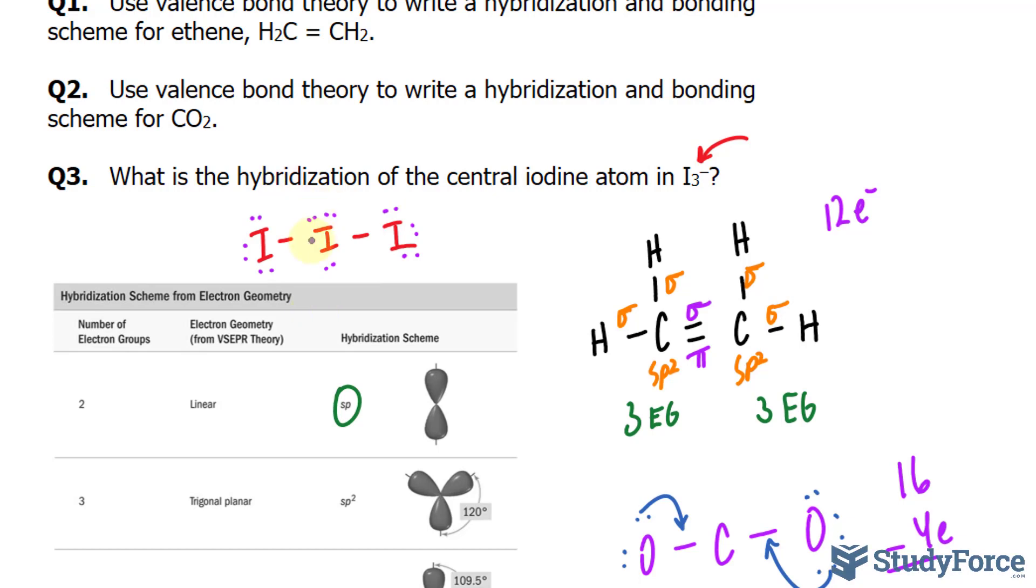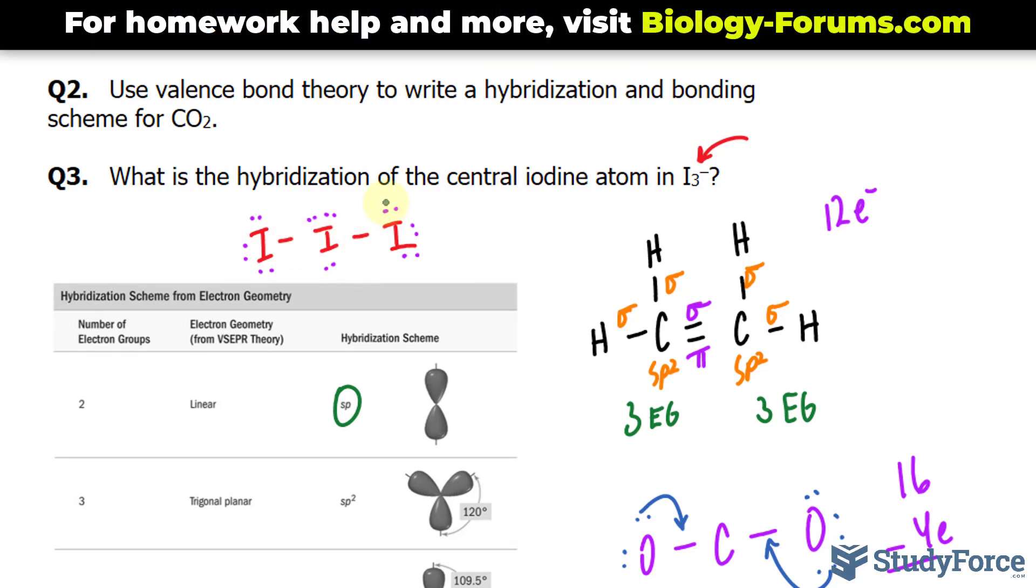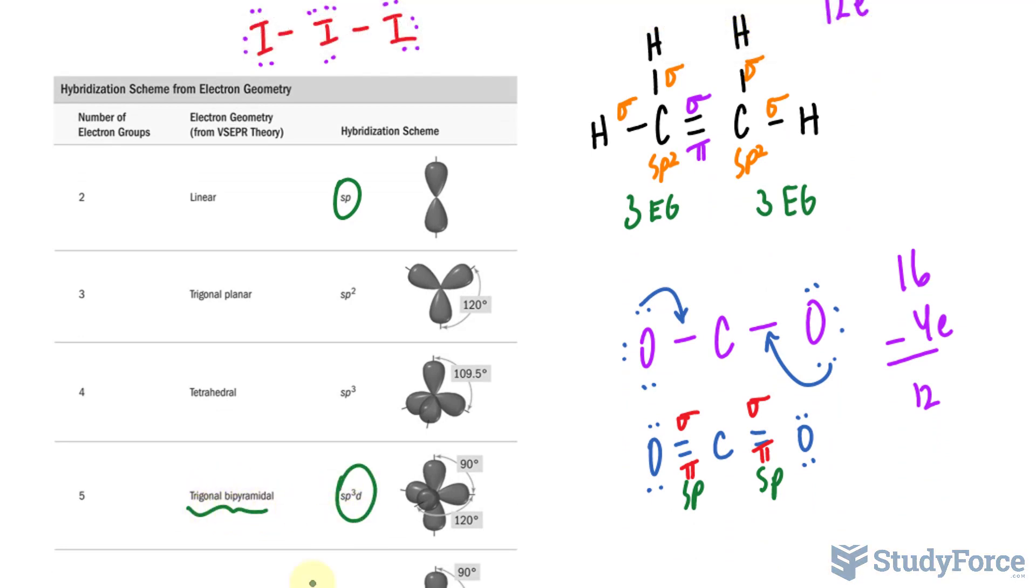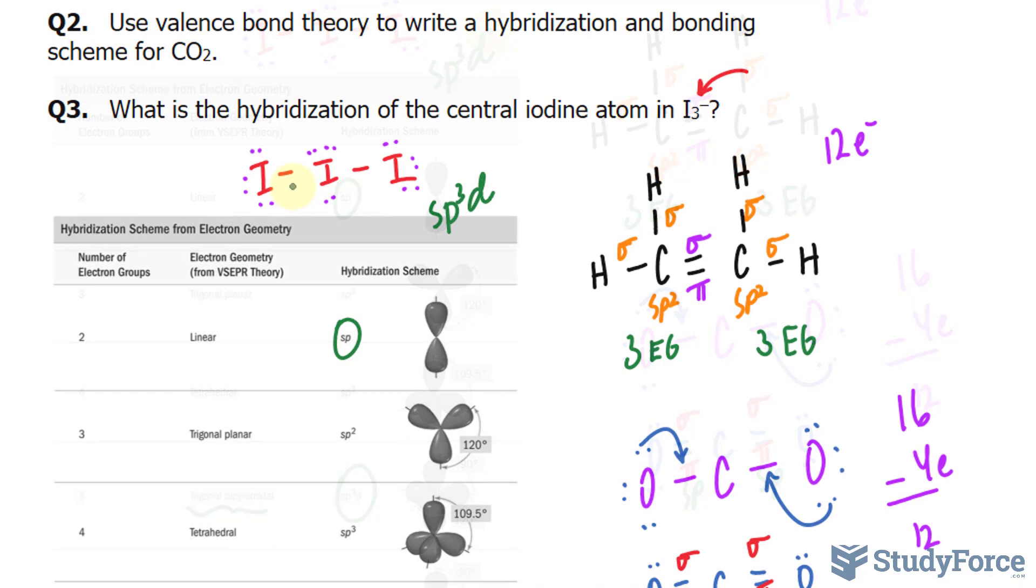which will go around the central iodine. So we have three lone pairs around this iodine and two bonding groups. Add that up, that's five. According to this, we are dealing with a trigonal bipyramidal, and its hybridization scheme is sp3d. Of course, these are its orbitals, and that's why we have this shape.